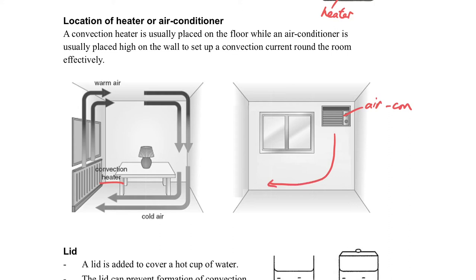But for the air conditioner, we'll place it at the top near the ceiling of the room so the cold air sinks and forms the convection current more effectively. These are the designs related to the heater and air conditioner location.